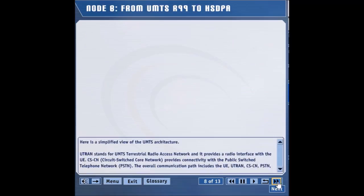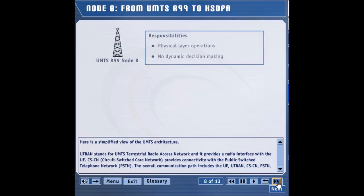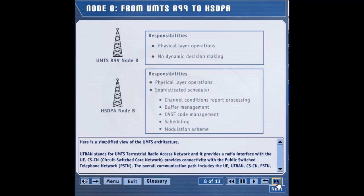Let's investigate the role of Node B in supporting HSDPA. The primary function of the Node B in a UMTS Release 99 system is to carry out physical layer processing such as channel coding, modulation, and spreading. The Node B does not need to make decisions such as data rate assignment since it receives such instructions from the RNC. The picture changes entirely in the case of an HSDPA Node B. The Node B in an HSDPA system has to perform numerous intelligent and computationally intensive tasks. In addition to the physical layer operations, the Node B now makes decisions such as user scheduling and the selection of data rates through the choice of packet size and modulation scheme.